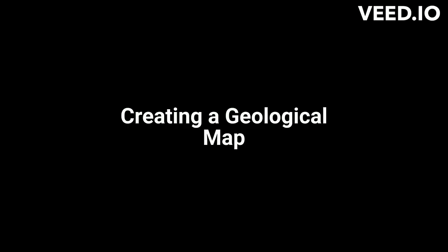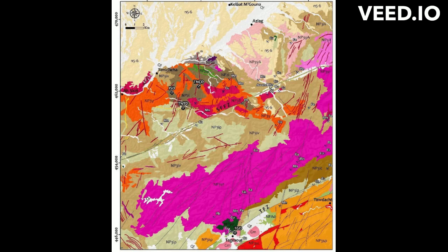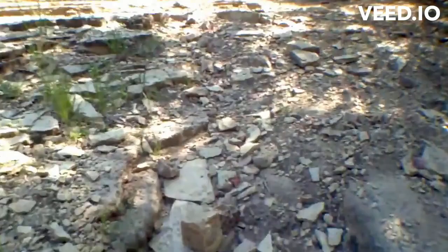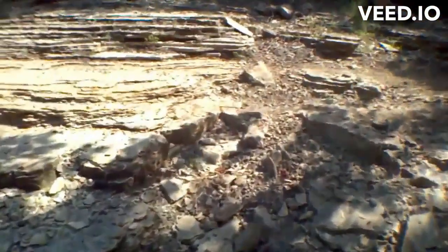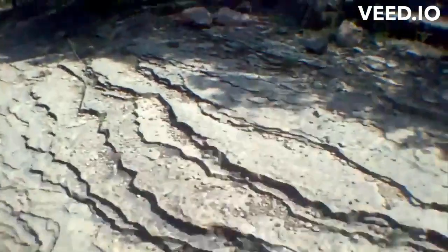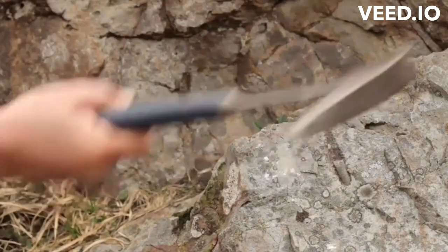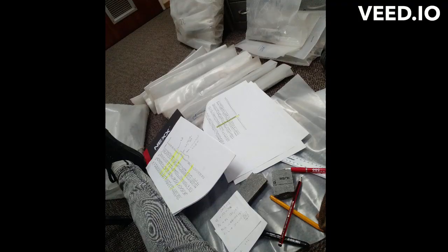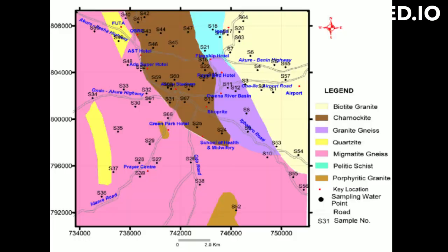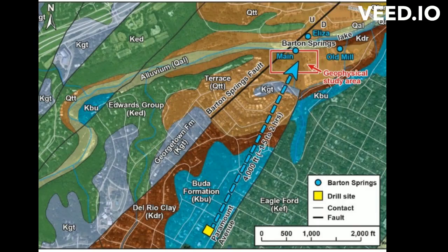Making geological maps is a complex and multi-stage process involving a variety of techniques and tools. The first step is to collect data about the area being mapped, which typically involves fieldwork including mapping rock outcrops, taking measurements of rock properties, and collecting samples for laboratory analysis. Once the data has been collected, a base map is prepared, which typically includes topographic features such as contour lines, roads, and rivers. This base map provides a framework for the geological map and helps to locate geological features accurately.